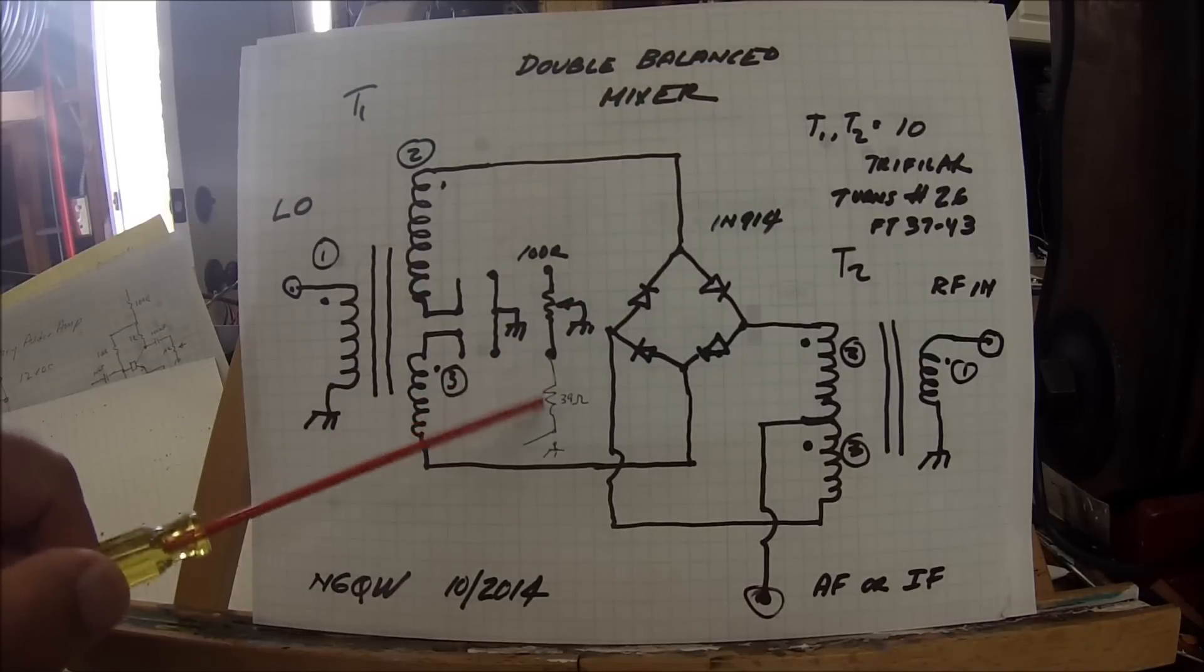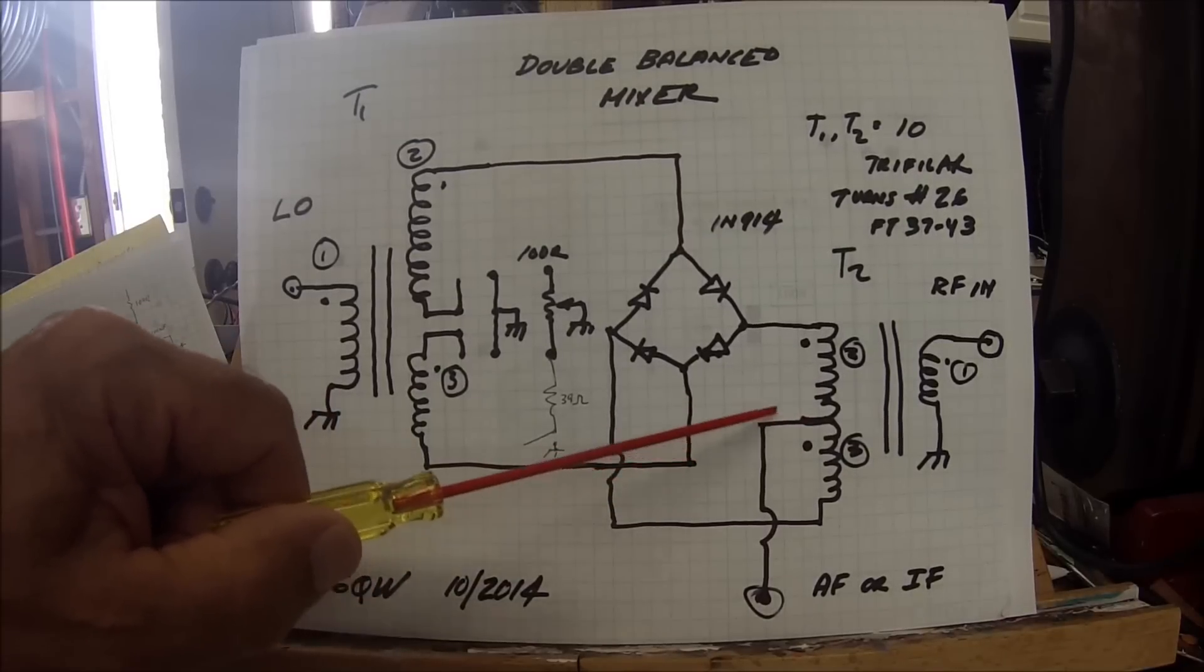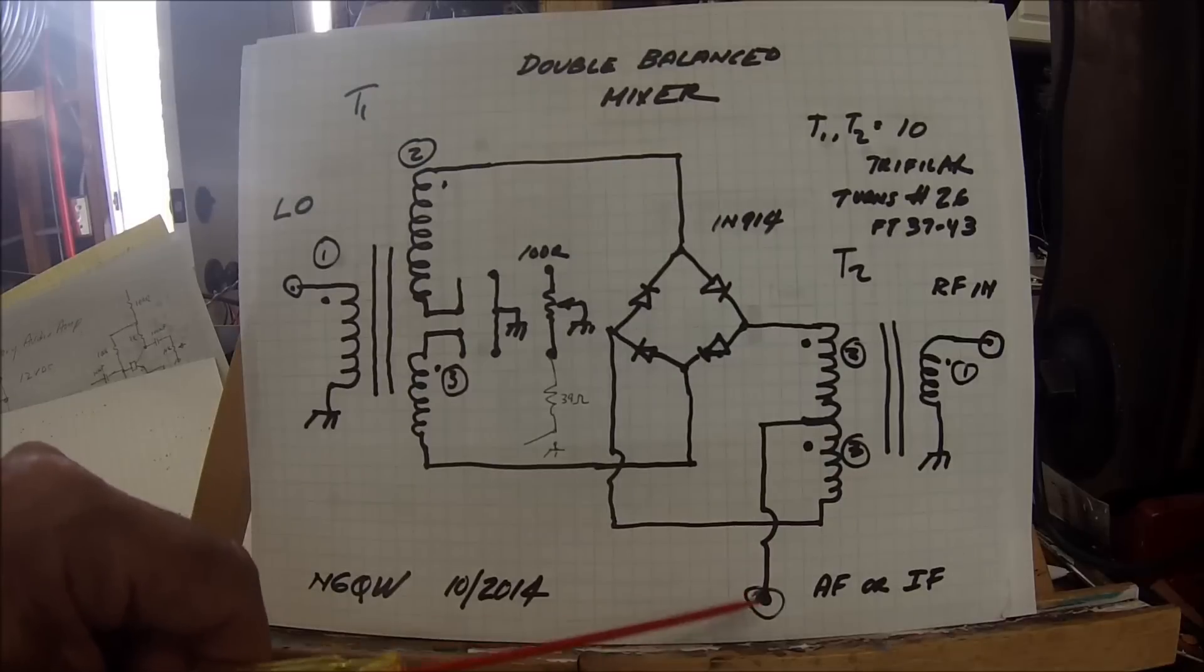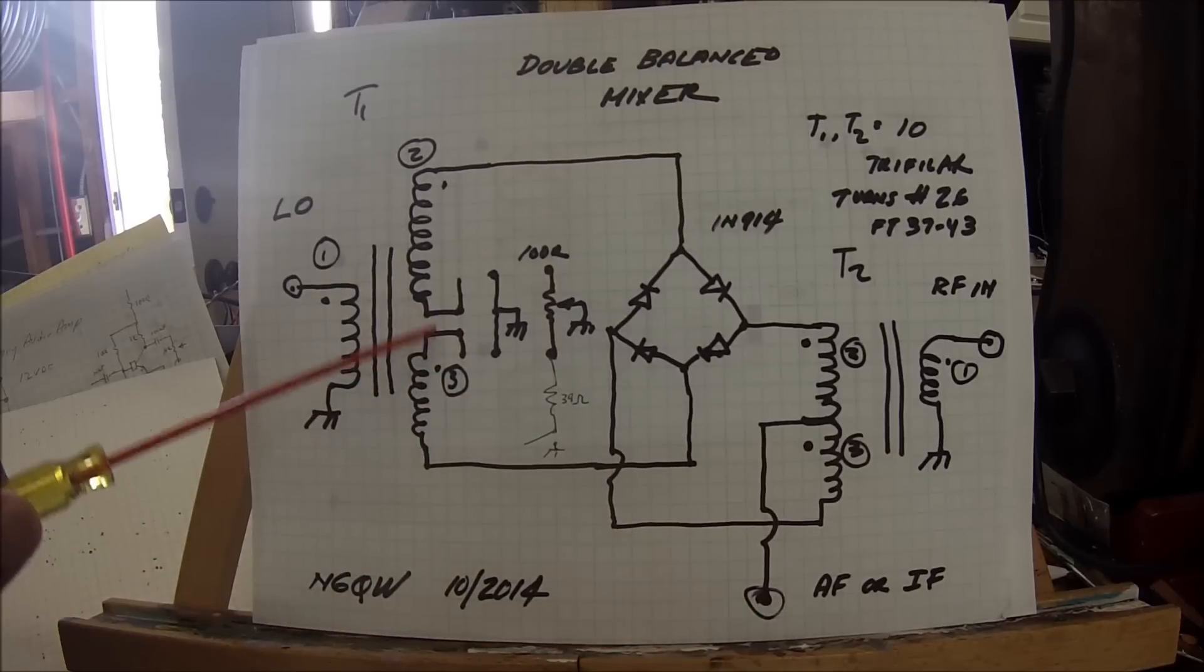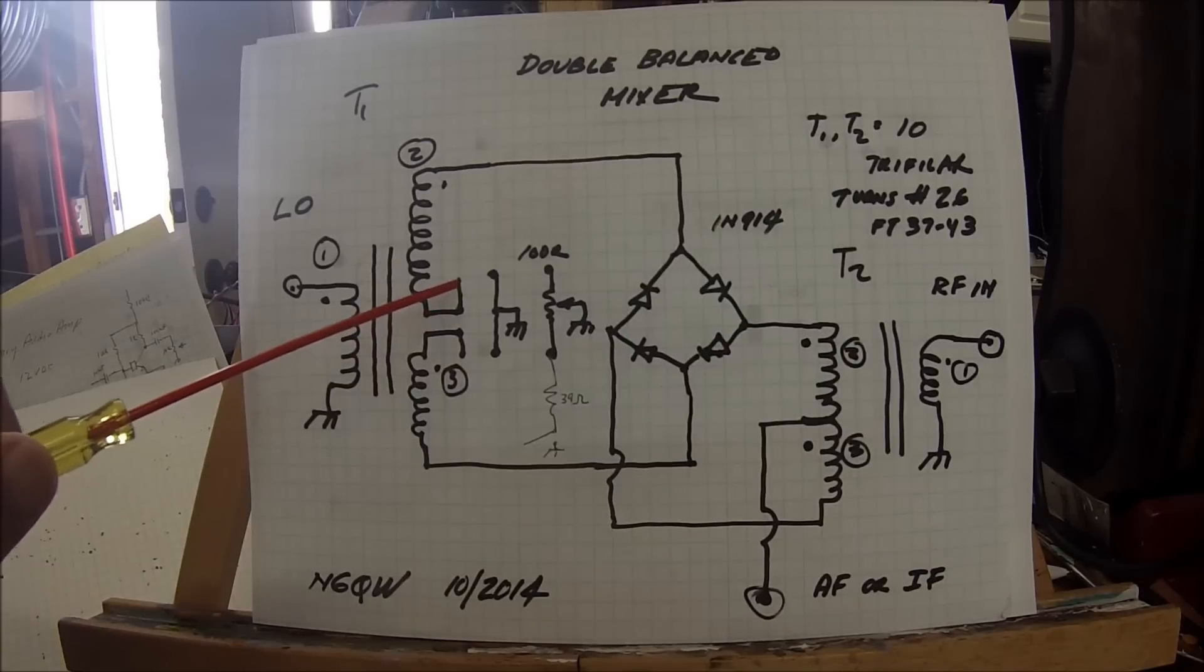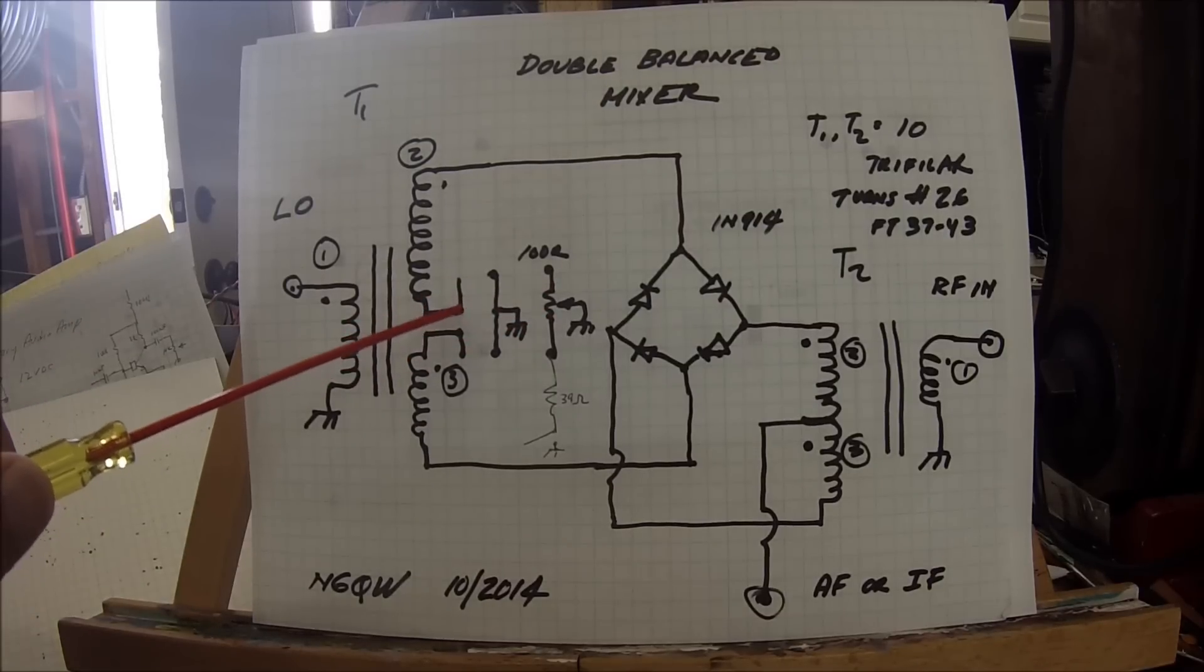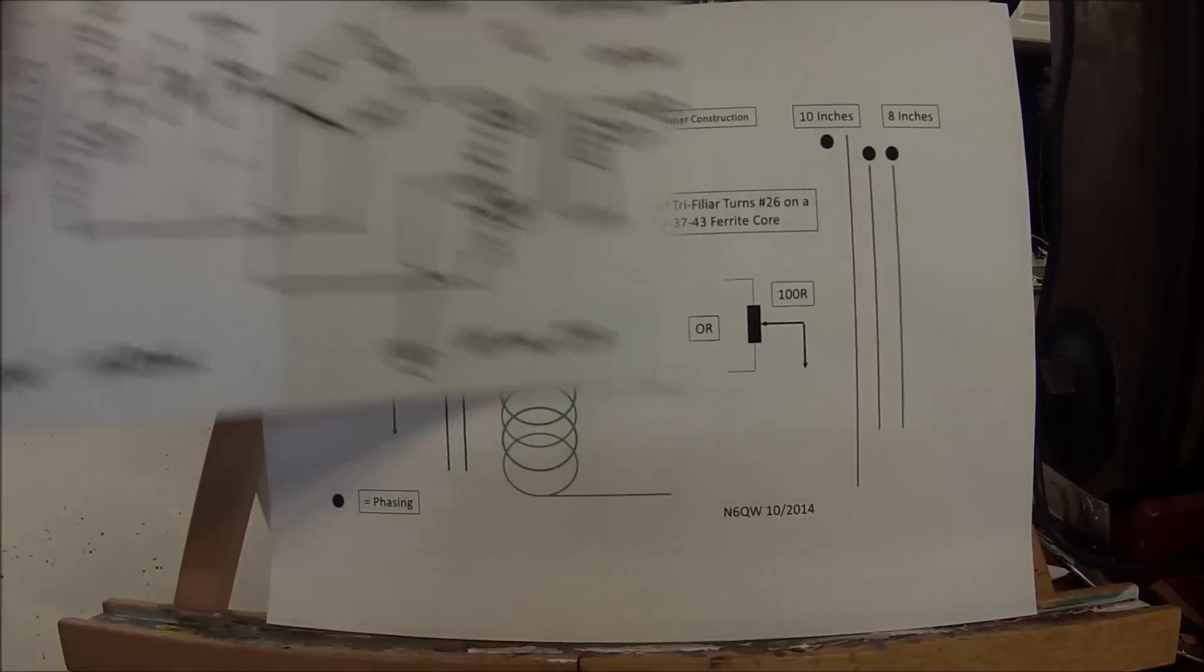You could use this arrangement for generating CW and determine the amount of carrier insertion by making this a variable pot. This is a worthwhile addition to a homebrew double balanced mixer. You do nothing to this set of windings because they're wired together. It's only on this one where the local oscillator connects. On the SBL-1, pins 5 and 6 are normally connected and grounded, but you could open them up and put this pot in.